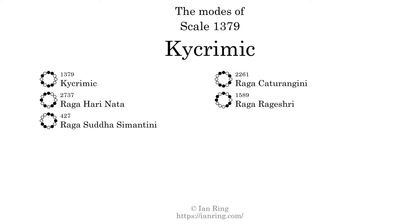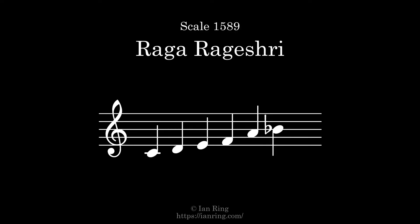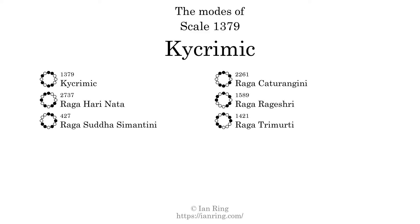The fifth mode is scale 1589, also known as Raga Rajasri. The sixth and last mode is scale 1421, also known as Raga Tramurti.